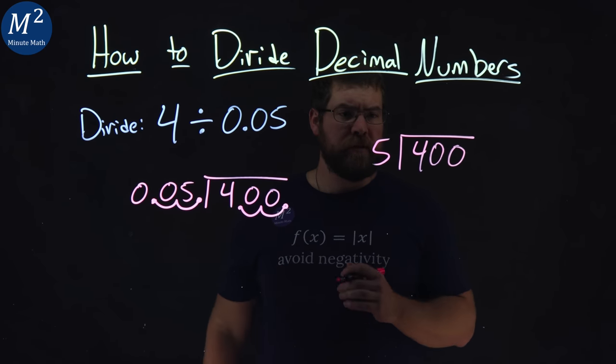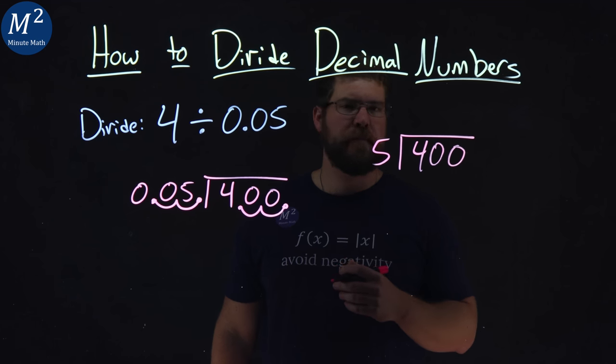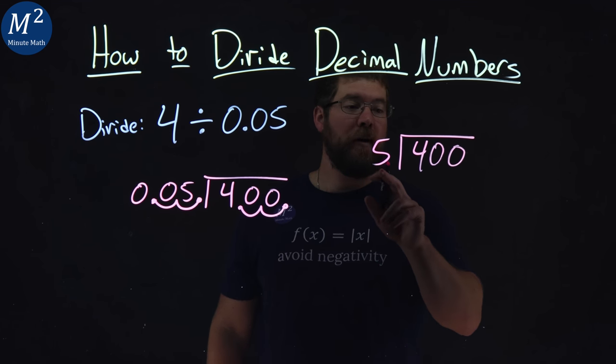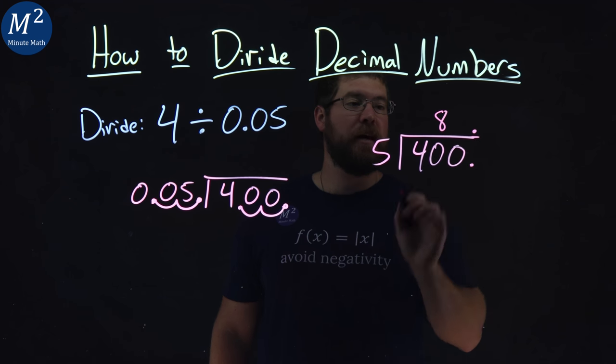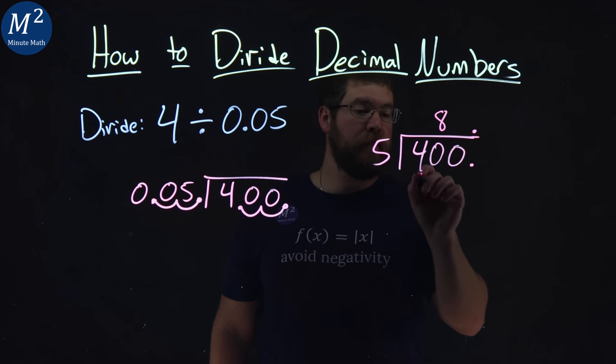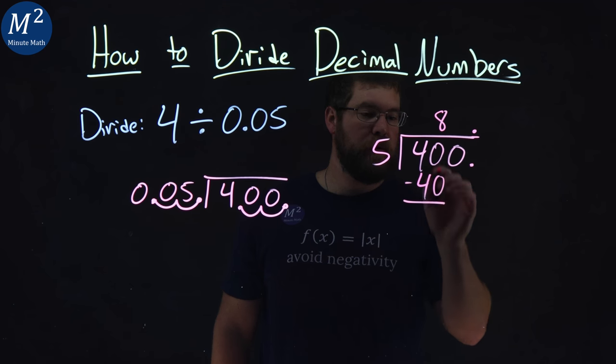All right. Long division. 5 goes into 4. Can't do that. 5 goes into 40. Remember this decimal place here. 5 goes into 40 8 times. 8 times 5 is 40. Subtract it. We get a 0.